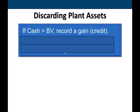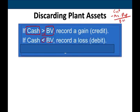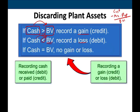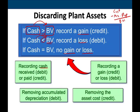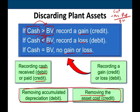Here are the rules. If the cash received is greater than the book value, you have a gain. The book value is cost minus accumulated depreciation — sometimes it's given, sometimes you have to compute it. If the cash received is less than the book value, or if you had to pay cash, you have a loss. If you received cash exactly equal to the book value, you have no gain and no loss. The best way to illustrate this is to work a few examples.